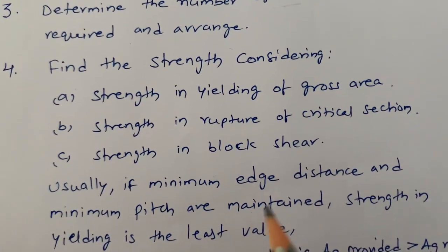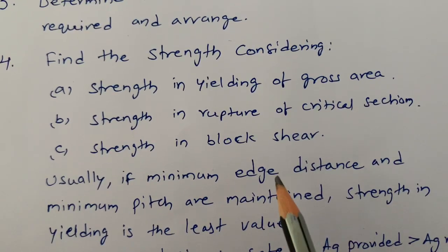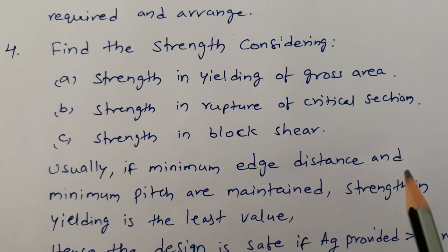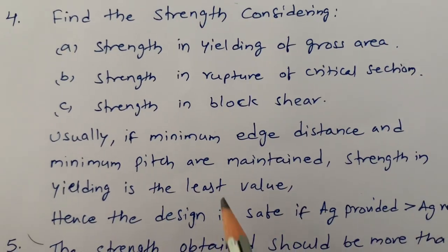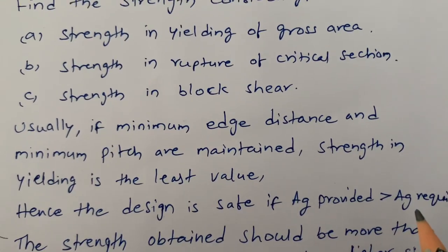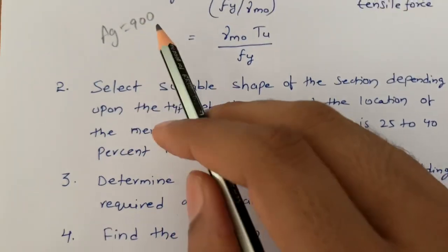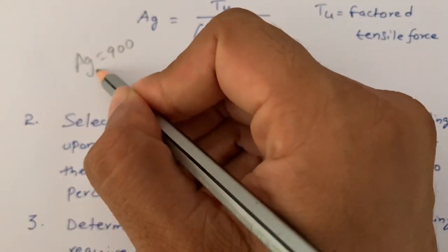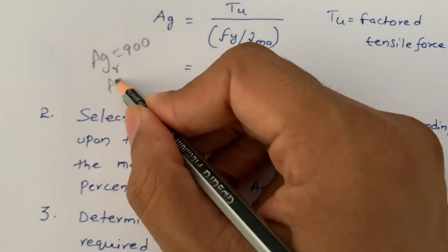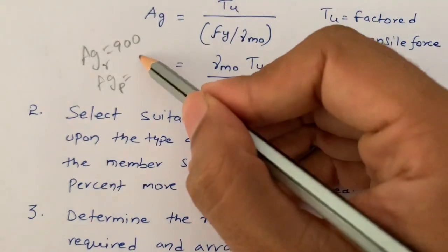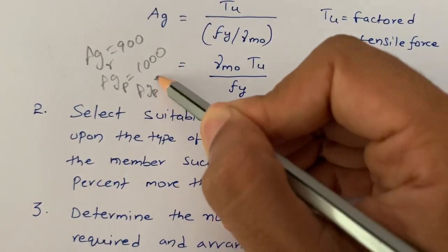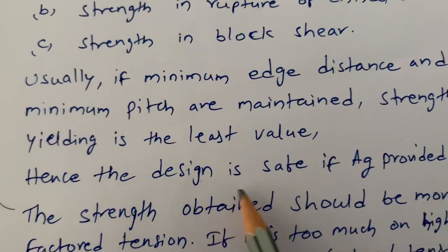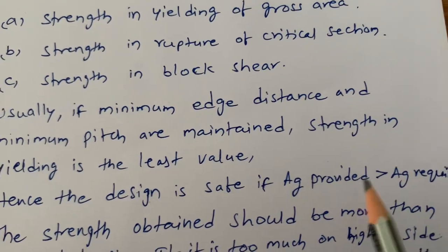Usually, if the minimum edge distance and minimum pitch distance are maintained, strength in yielding gives the least value. In that case, the design is safe if A_g provided is greater than A_g required. For example, if A_g required is 900 and A_g provided is 1000, then A_g provided is greater than A_g required, and hence the design is safe.